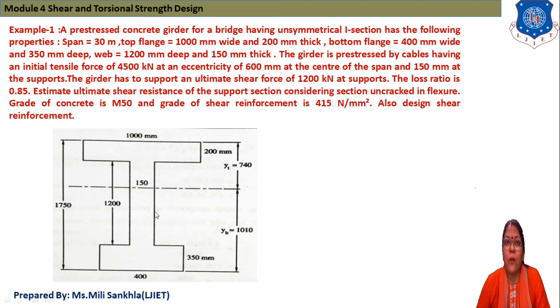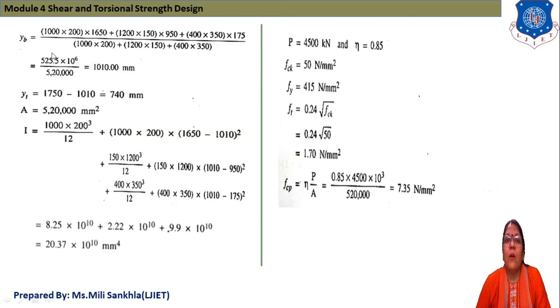According to data, we have to plot our I girder. This one is the unsymmetrical section. First, we find out centroid from bottom. YB is equal to we get 1010 mm and total overall depth of I girder is 1750 minus this 1010 and we find 740 mm that is YT. And total area of this I girder is equal to 520,000 mm square. According to this YT, YB and area, we find out moment of inertia with respect to parallel axis theorem. This one is the flange, then web and flange. And finally we get I 20.37 into 10 raised to 10 mm raised to 4.